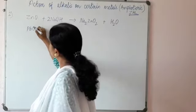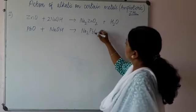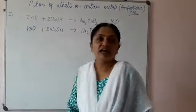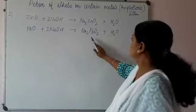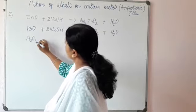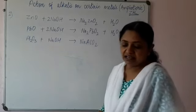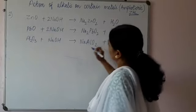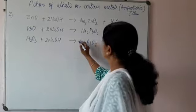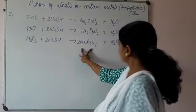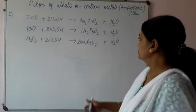When PbO reacts with NaOH or KOH, we get sodium plumbate — these are all complex soluble salts. Since these oxides are amphoteric, they behave as an acid and we get salt plus water. When aluminium oxide reacts with sodium hydroxide, we get sodium aluminate (NaAlO₂) along with water. For balancing: aluminium is 2 on each side, sodium is 2, and oxygen totals 5 on each side. So it is balanced.